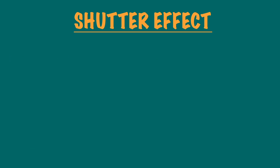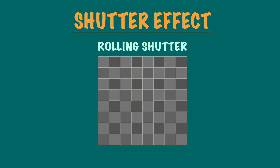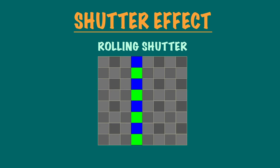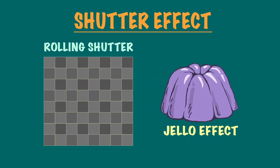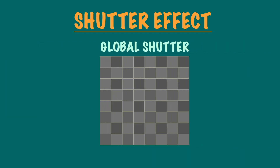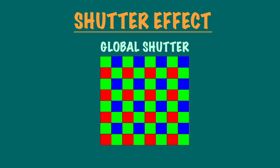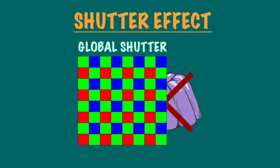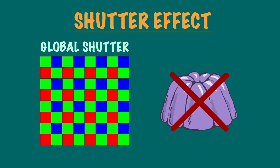A rolling shutter means that the photosites are activated from top to bottom, or side to side. This technique can sometimes give unusual effects, like the jello effect. On the other hand, the newer global shutter doesn't have this problem, because all of the photosites are switched on at the same time. This way, the motion blur can still be regulated, but you don't get any distortion as a side effect.